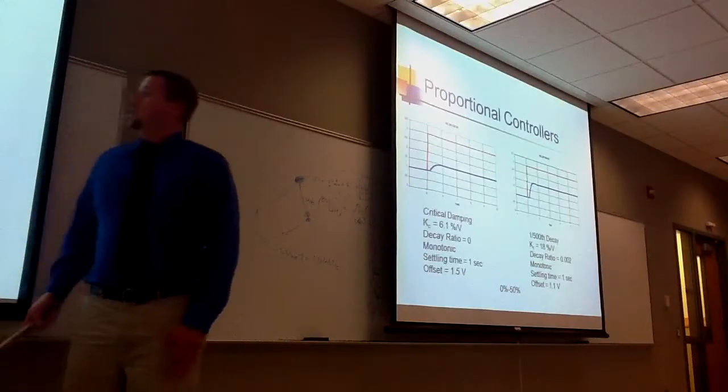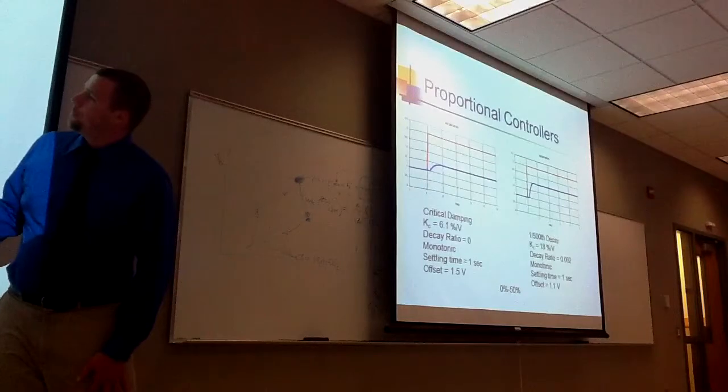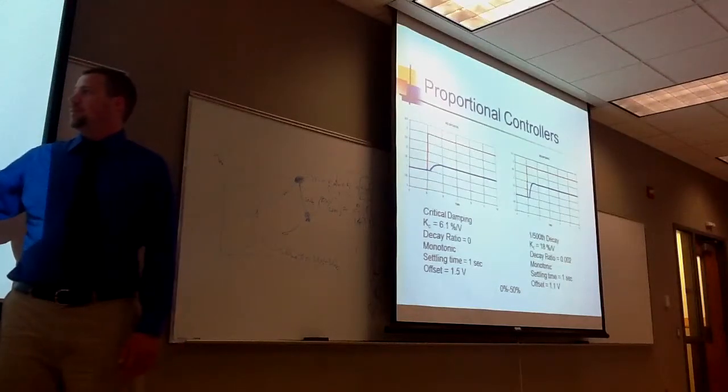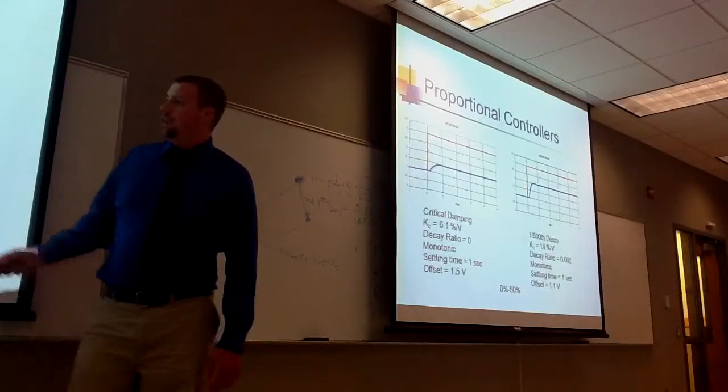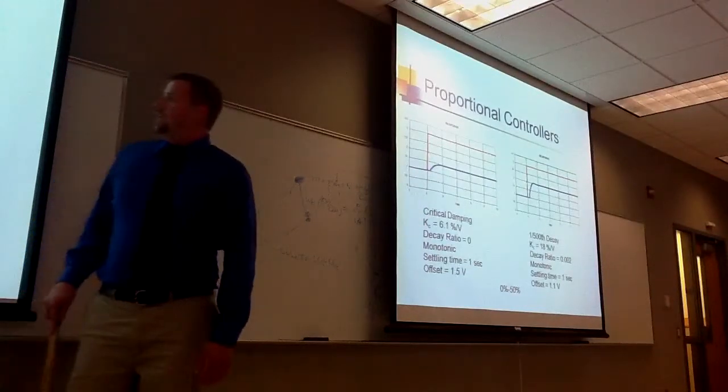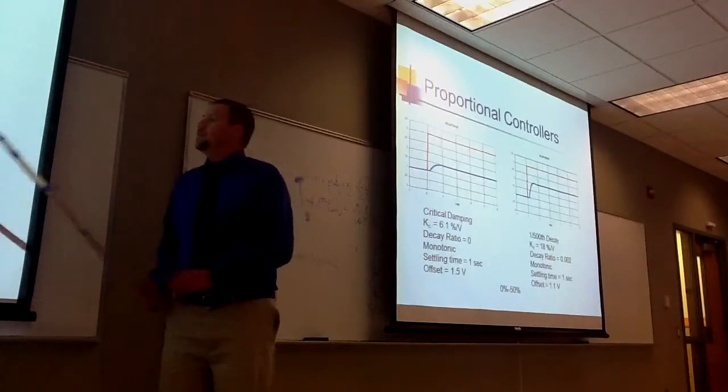There's no overshoot. But there is a lot of offset. So the KC value of the critically damped is 6.1. And we have an offset of 1.5 volts. It took about one second to settle. And then the 1/1000th decay.